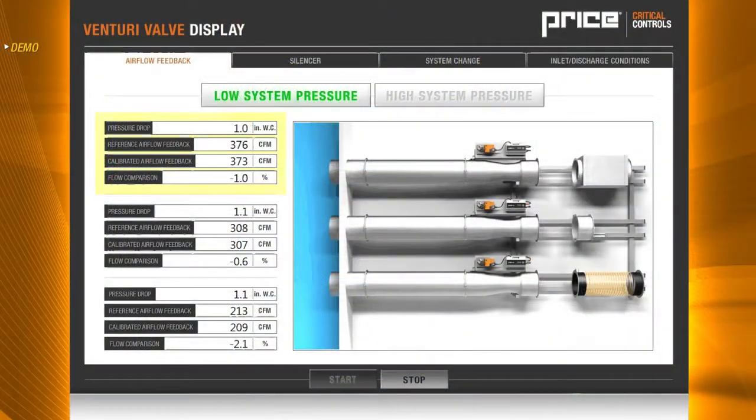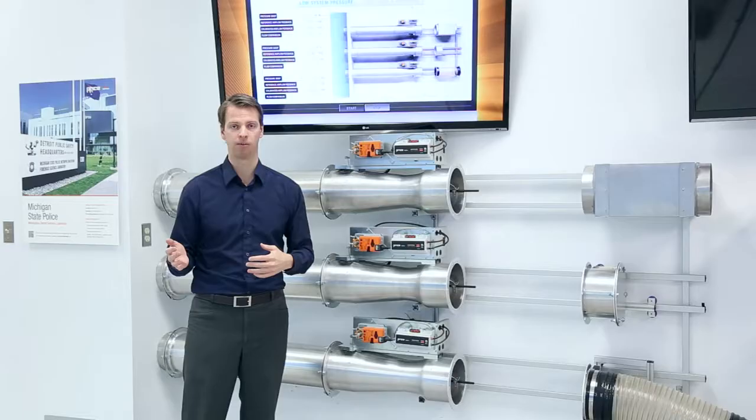You can see that on our top valve we have one inch static pressure across that valve. We have 378 on our reference air signal and 375 being provided as our calibrated signal from the Venturi valve for a difference of 0.6%. On a Venturi valve to maintain pressure independence, it needs to be within plus or minus 5% of the reference airflow.